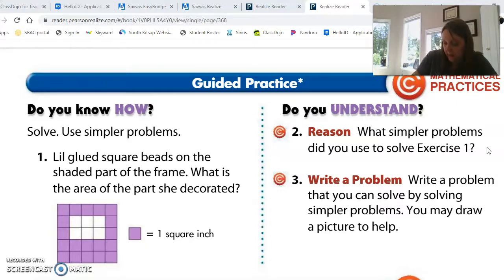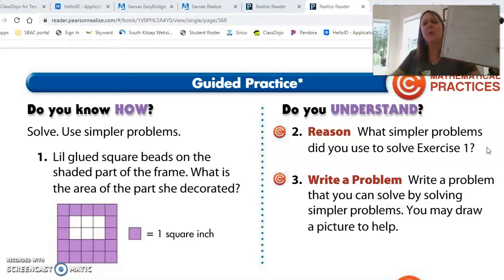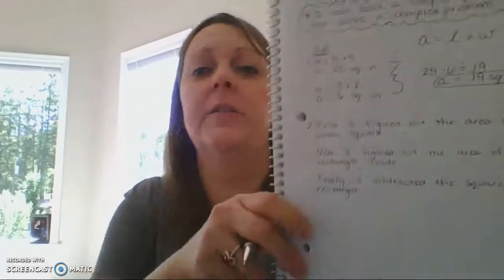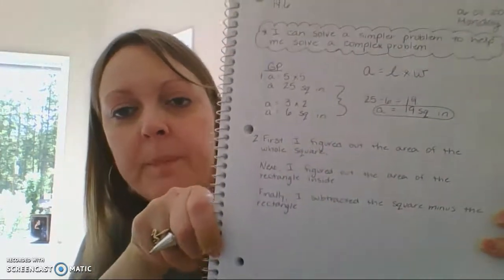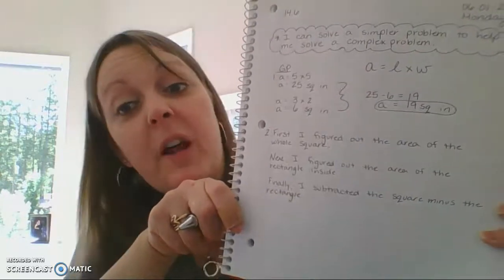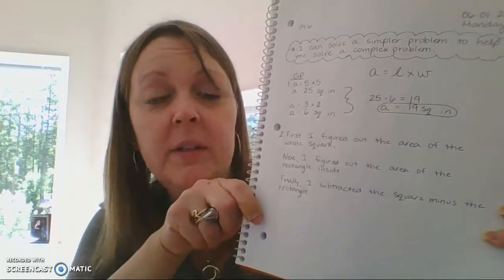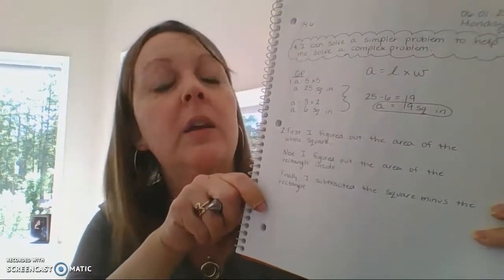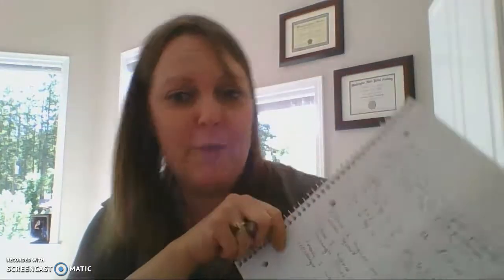I subtracted the square minus the rectangle. And remember, I might write a little faster than you guys, so if you need to pause me at any time, please do so. So all we did was we did three things. First, we figured out the area of the whole square. Then, next, we figured out the area of the rectangle inside. And finally, we subtracted. Perfect. So, see, it's really not that hard to figure out a simpler problem to solve a harder one. Let's do another one.